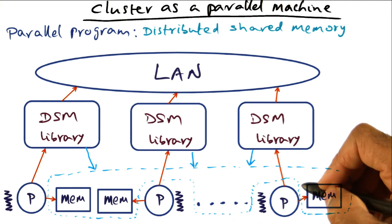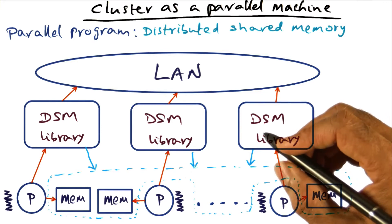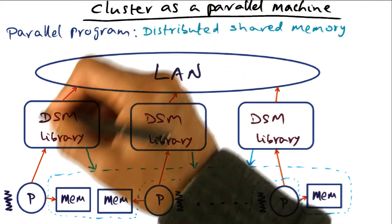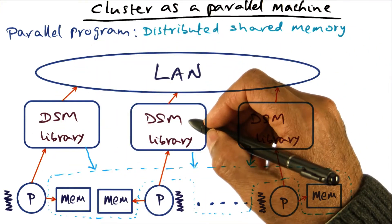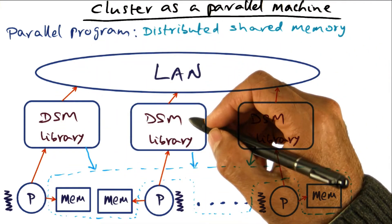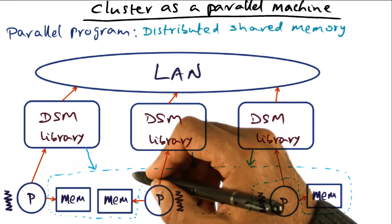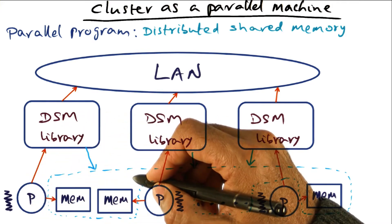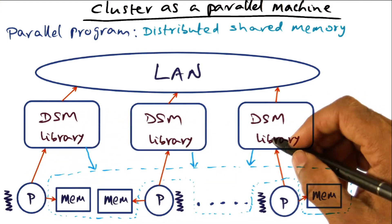Therefore, they have an easier transition path, for instance, from a sequential program or a program written on an SMP to a program that runs on the cluster. They don't have to think in terms of message passing but can think in terms of shared memory, sharing pointers across the entire cluster.